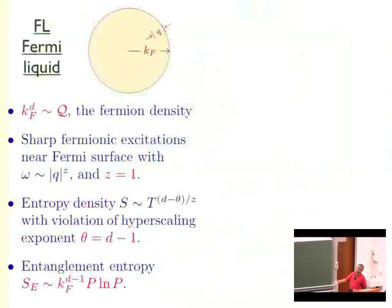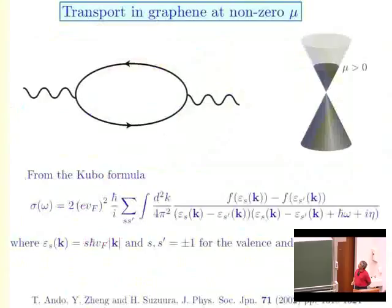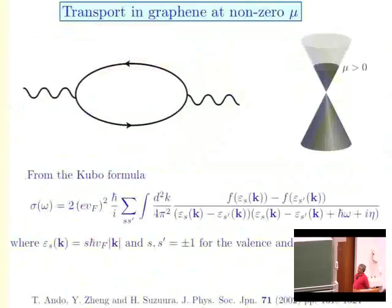I'm going to fill in the second half by talking about some more complicated metallic systems. Another property I want to talk about is the conductivity. We already computed the conductivity of free Dirac fermions in my previous lecture — it just involves computing the current-current correlation function with a one-loop diagram. Now we just redo that computation adding a chemical potential. This is more condensed matter notation, but you could do this with Dirac fermions too. Let's do it at zero temperature; after you do the frequency integral this is the kind of integral you have to evaluate.